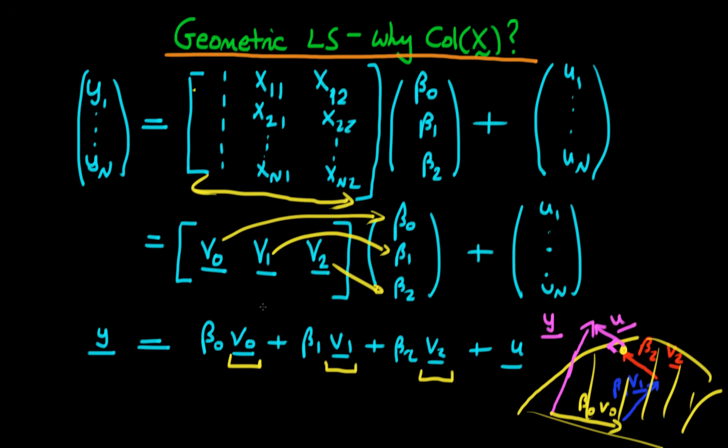But the bottom line is, because of the way in which we can write our matrix, we can think about each of these columns as representing a vector. And hence, we can think about the space which is spanned by each of the different columns in our matrix as representing some sort of vector space, and we call that vector space the column space of X.